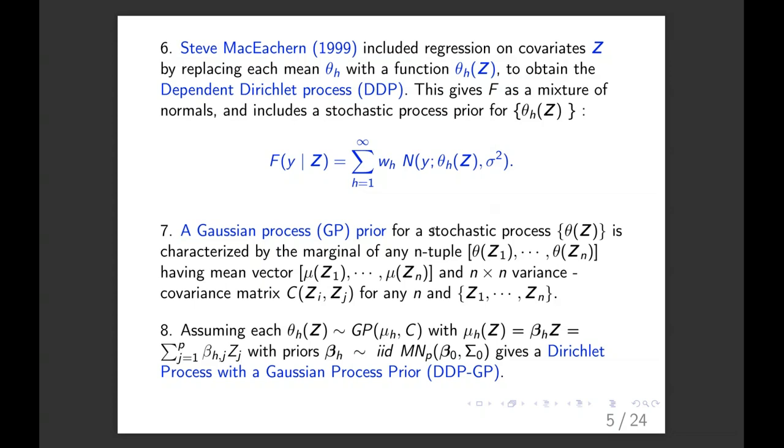So the last idea is that you say, well, I want to model this mean function for the normals. And we do that using something called a Gaussian process prior. And so what is that? Well, if you take any Z, say Z1 through ZN, so N vectors of covariates, the Gaussian process theta of Z1 through theta ZN has got some mean vector and some variance covariance matrix. And so if we assume that the theta H's are distributed according to a Gaussian process prior, with the mean being a rather simple thing, and then some variance covariance structure where the betas are multivariate normal, we have what's called a dependent Dirichlet process.